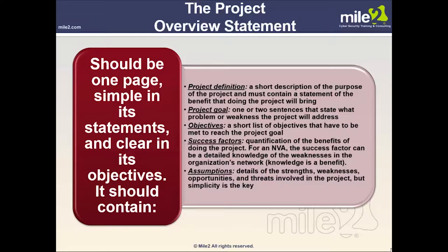The project overview statement should generally be one page, simple in its statements, and clear in its objectives. It should contain the project definition — a short description of the project's purpose — statements of the benefit, a project goal with one or two sentences stating what problem or weakness the project will address, a short list of objectives to reach that goal, success factors such as quantification of benefits, and assumptions such as details of strengths, weaknesses, opportunities, and threats. Simplicity is a big key.